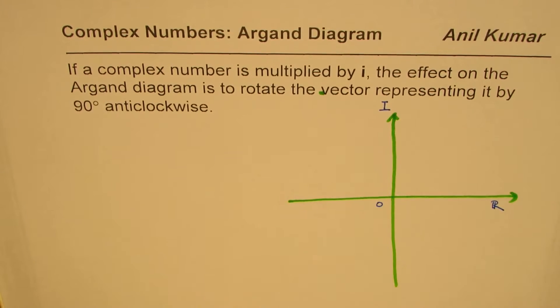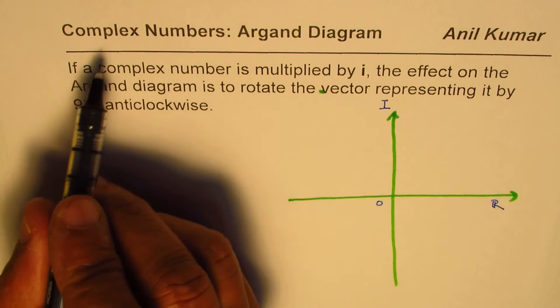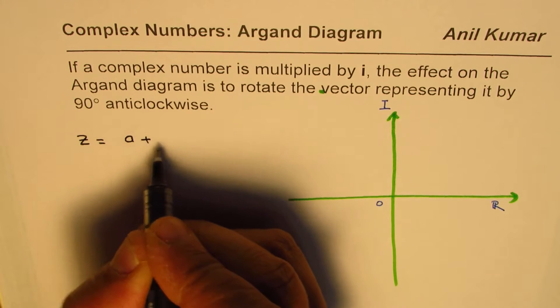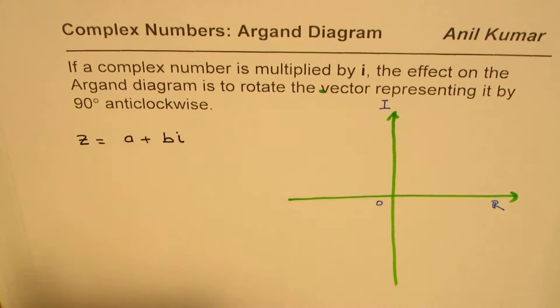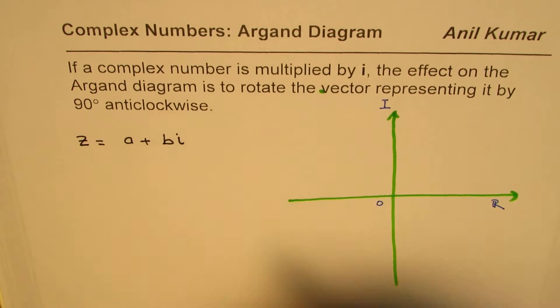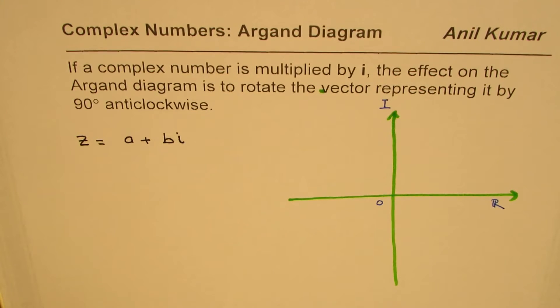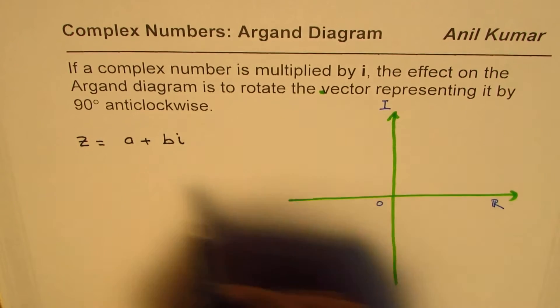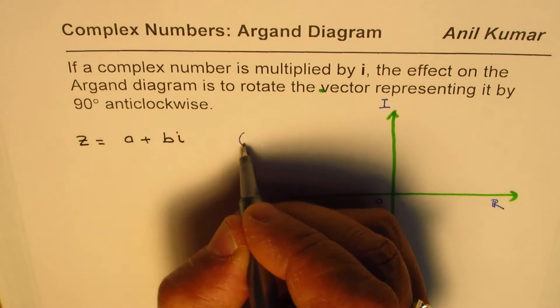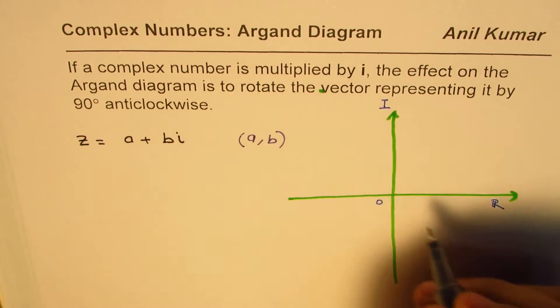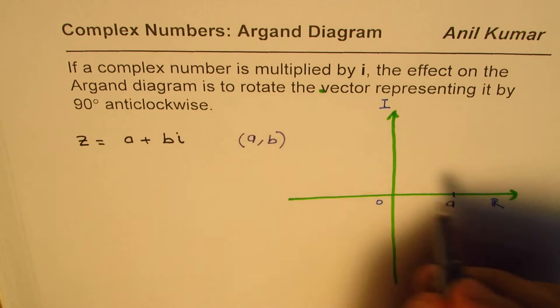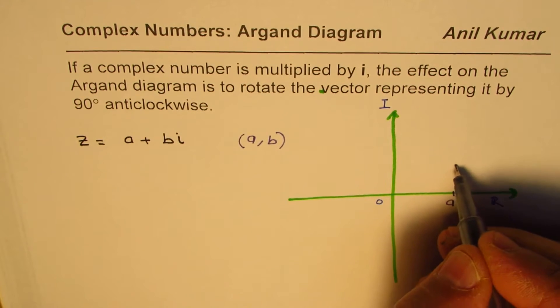So, let me consider a general vector. Let us say a complex number z equals a plus bi. Now, in this case, a is the real part, b is the imaginary part. So, to represent this on the Argand diagram, we will go to a point, Cartesian point, which is (a, b), that is to say, along the real axis will go a units and along the imaginary axis will go b units.